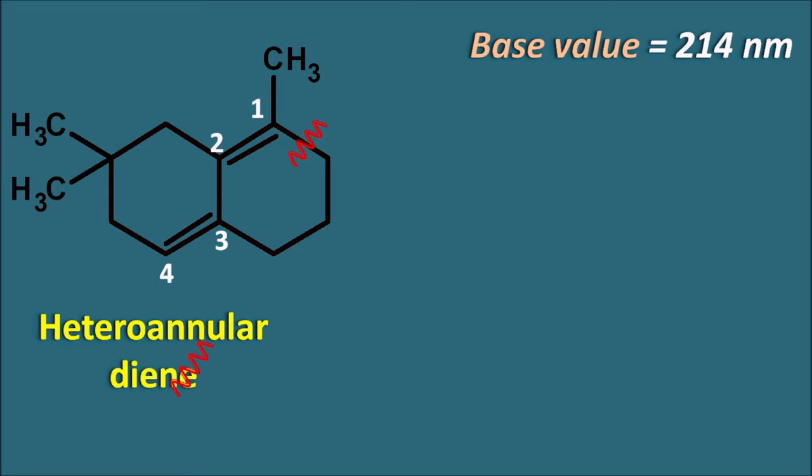Now let us look at another structure with three cyclic ring systems. Identifying the chromophore: 1, 2, 3, 4, 5, 6 — the chromophore is extended and it is now a triene, not just a diene. Two types of dienes can be observed: double bonds 1-2-3-4 form a homoannular diene, while 3-4-5-6 form a heteroannular diene. Since homoannular gives a higher lambda max, we consider the homoannular base value of 253 nm. Ring residues are present at positions 1, 2, 3, 4, and 6, giving 5 × 5 = 25 nm.